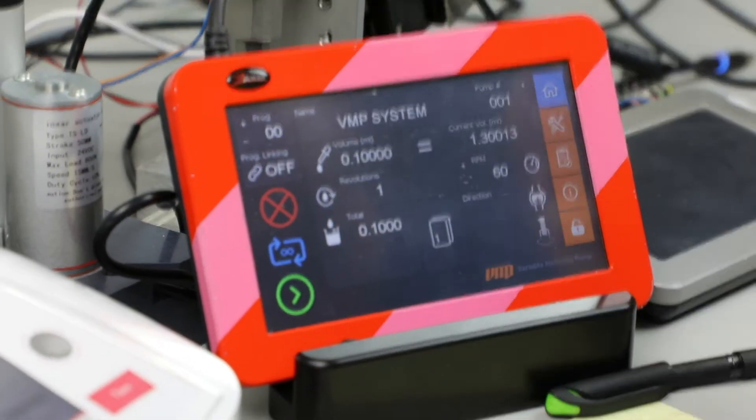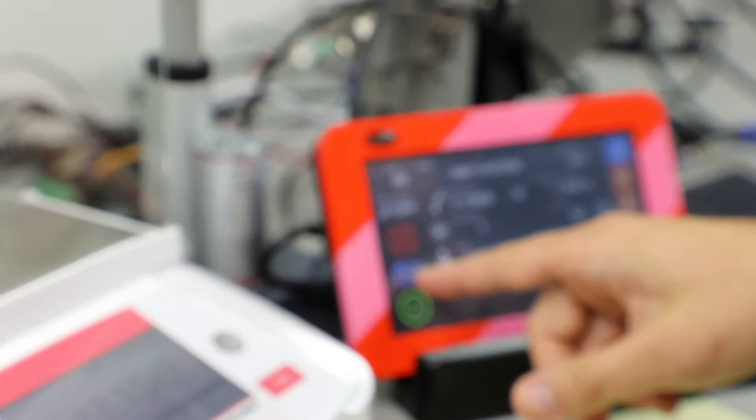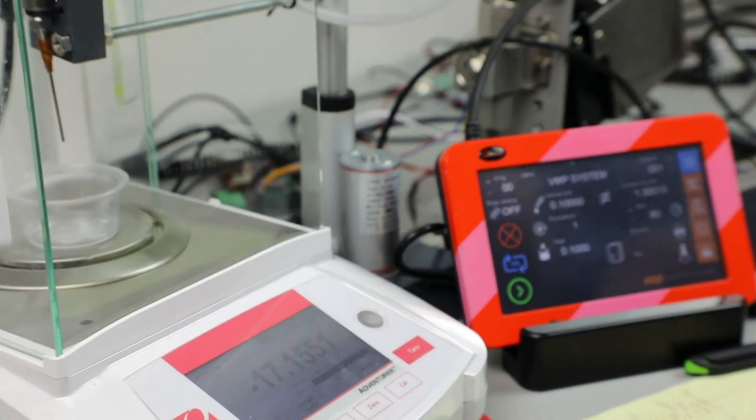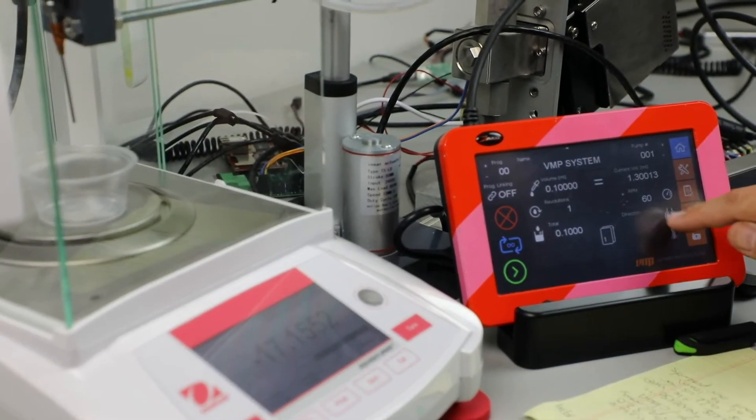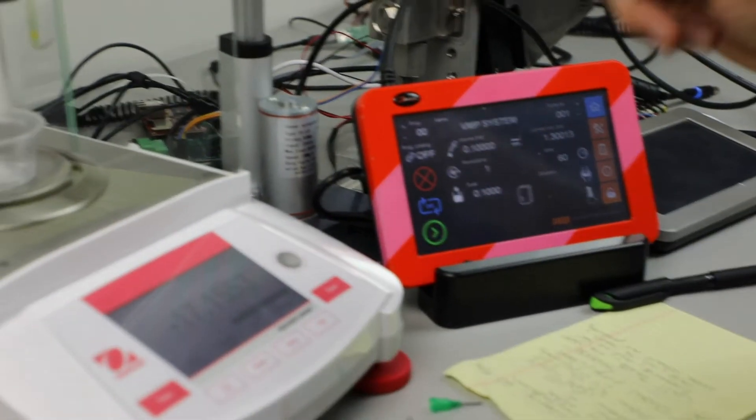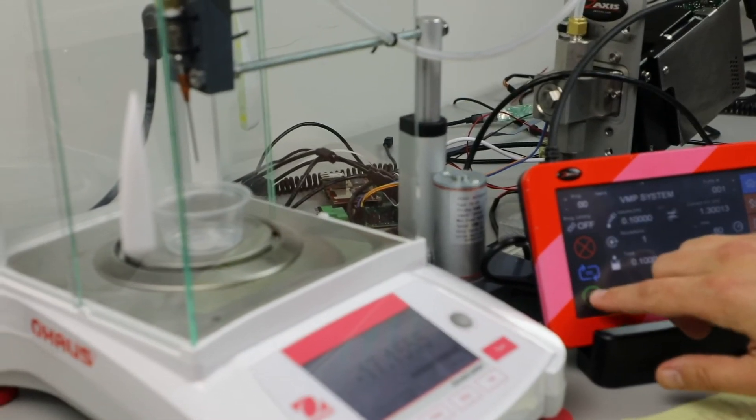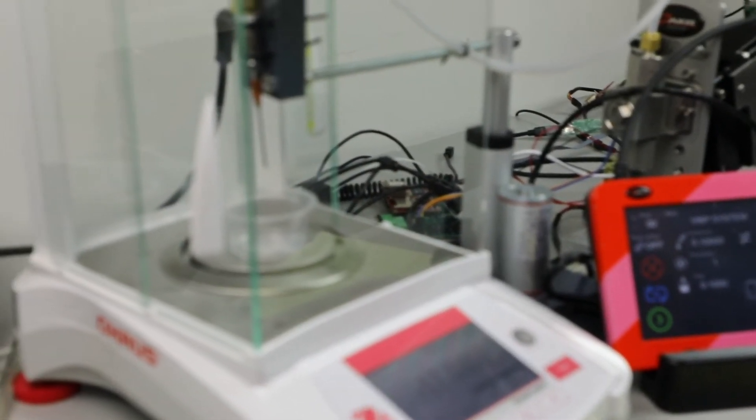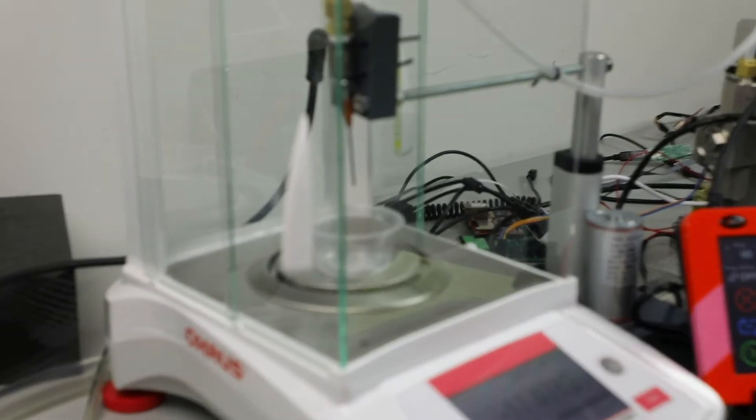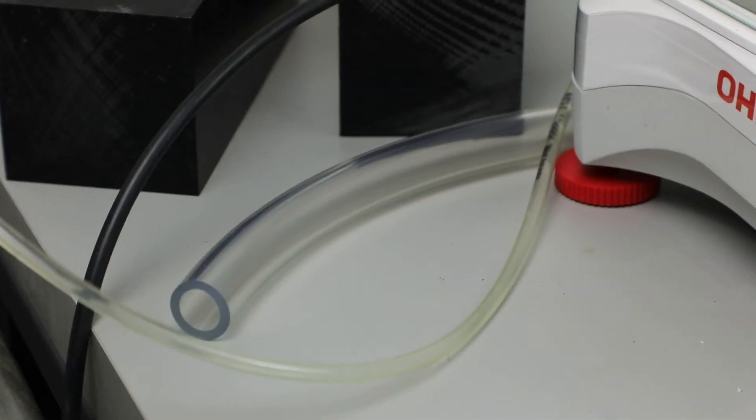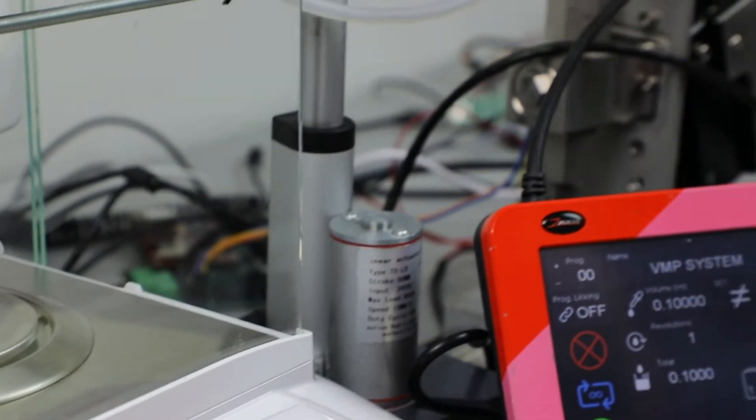However, we're going to prime the system. So I'm going to prime in a continuous mode. I'm going to do 60 RPM, which happens to be a slow speed. I'm going to change my pump direction now that I'm going to pump towards my pan balance. I'm going to hit start. You hear the pump turn on. The fluid is slowly coming up the tubing.